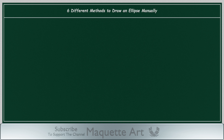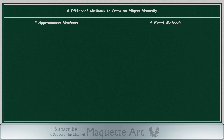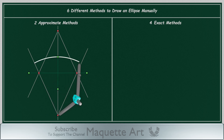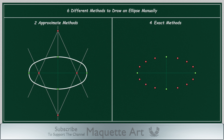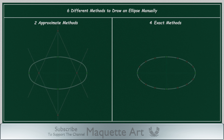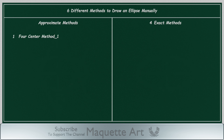In this video, I will explain six different methods to draw an ellipse manually. I will split those six methods into two groups. The first group contains two approximate methods, while the second group contains four exact methods. The main concept of the approximate methods is finding four points to be used as the center of the compass to draw four arcs which form the ellipse, while in the exact methods the concept is finding points along the circumference of the ellipse, then connecting those points manually by hand to form the ellipse.